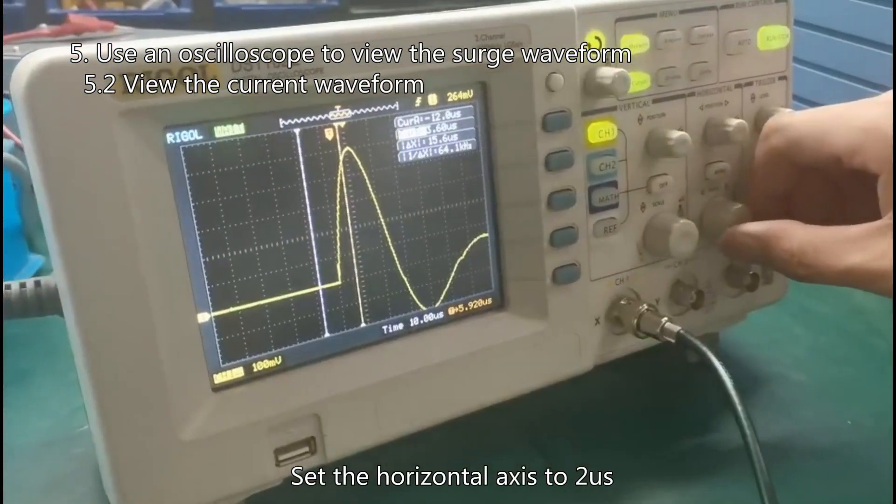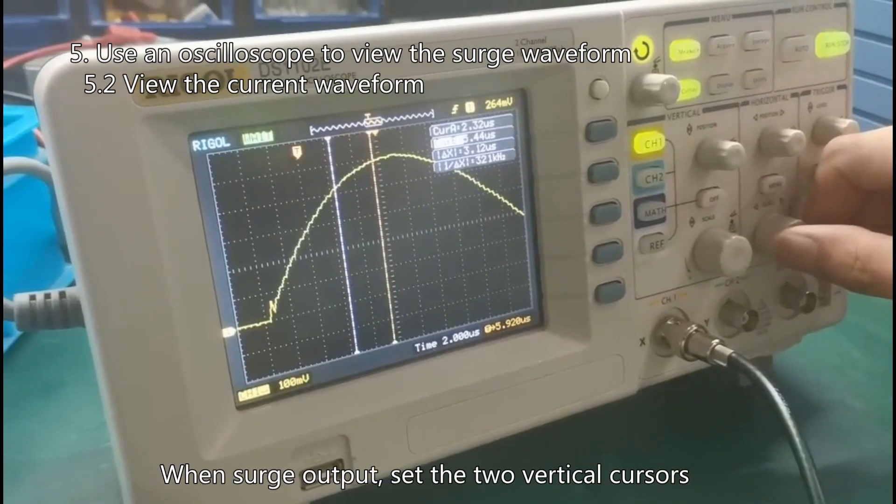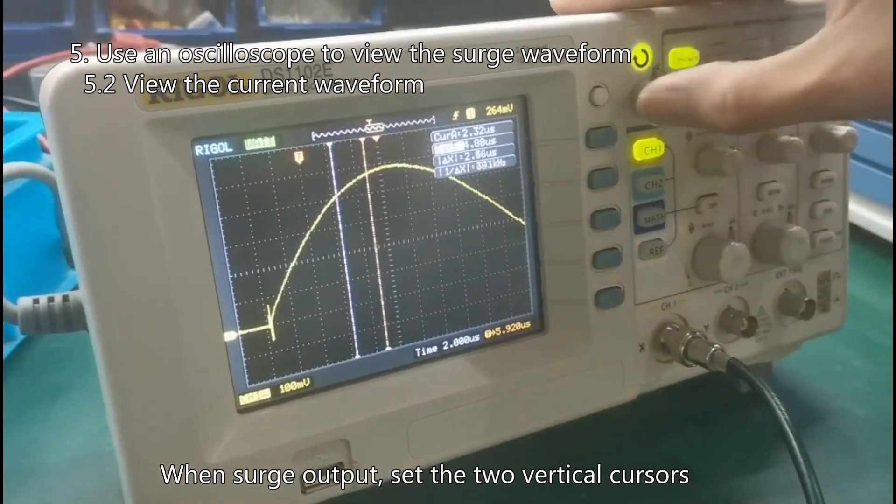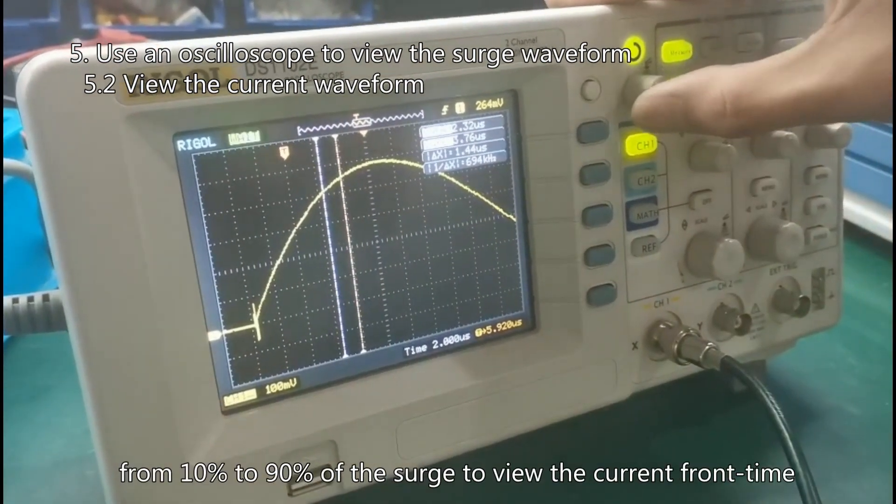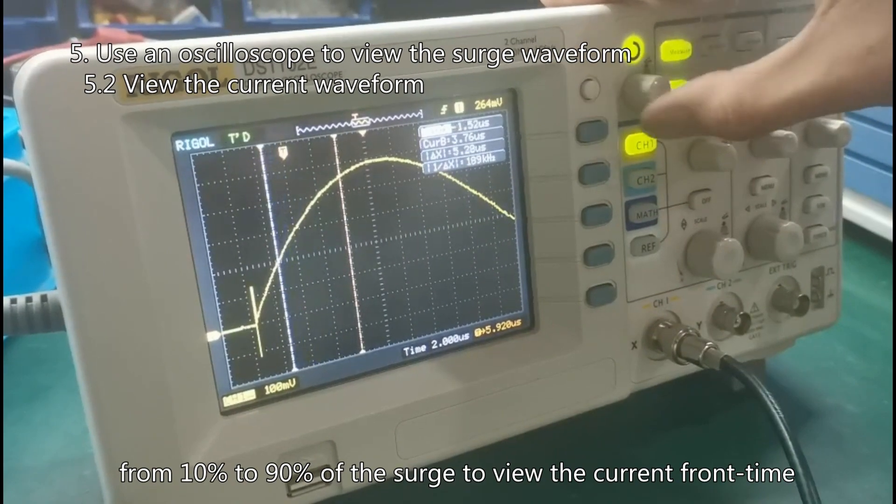Set the horizontal axis to 2 microseconds when surge output. Set the two vertical cursors from 10% to 90% of the surge to view the current front time.